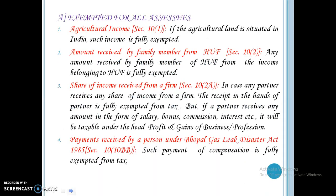First, we will discuss exempted incomes for all assesses. First one is agricultural income — if the agricultural land is situated in India, such income is fully exempted. Second, any amount received by a family member of HUF from the income belonging to HUF is fully exempted. Third, share of income received from a firm — if any partner receives any share of income from a firm, the receipt in the hands of the partner is fully exempted from tax.